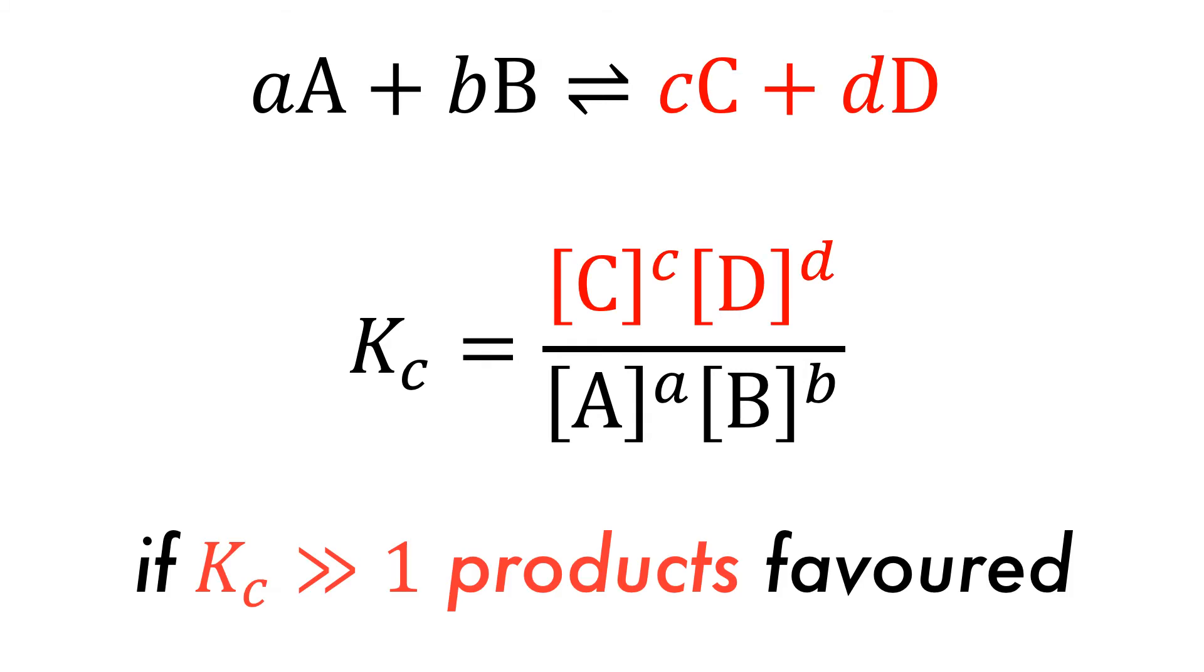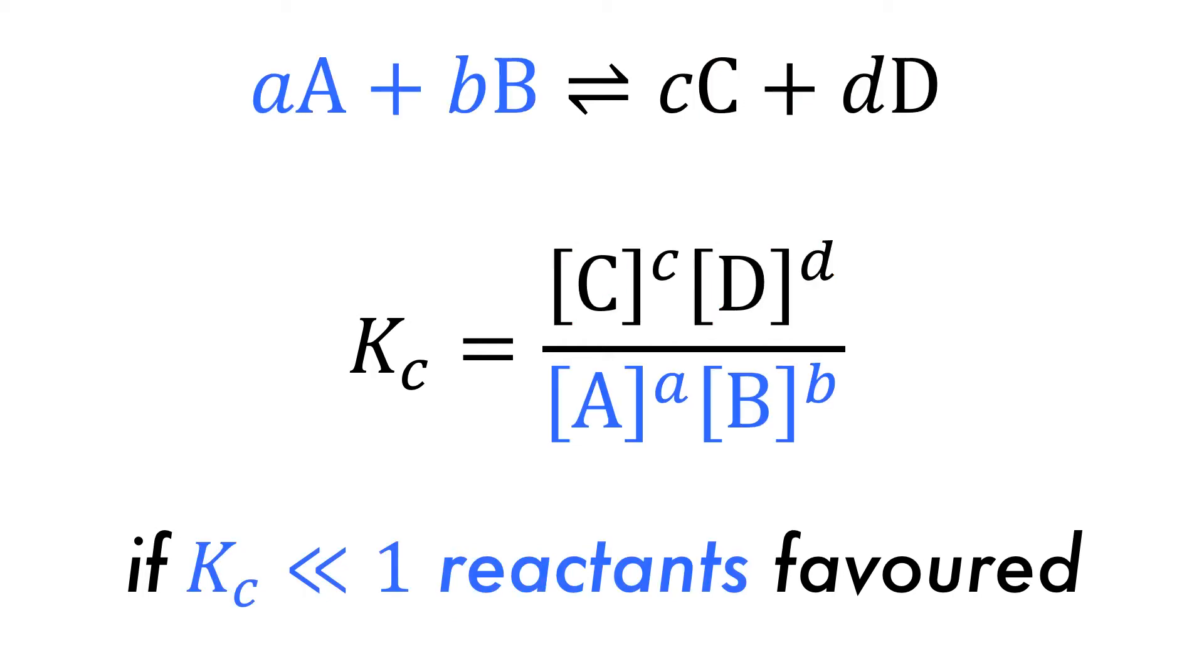If Kc is much greater than 1, then this means the numerator is bigger and the products are favored. Conversely, if Kc is much less than 1, then the denominator is larger and the reactants are favored.